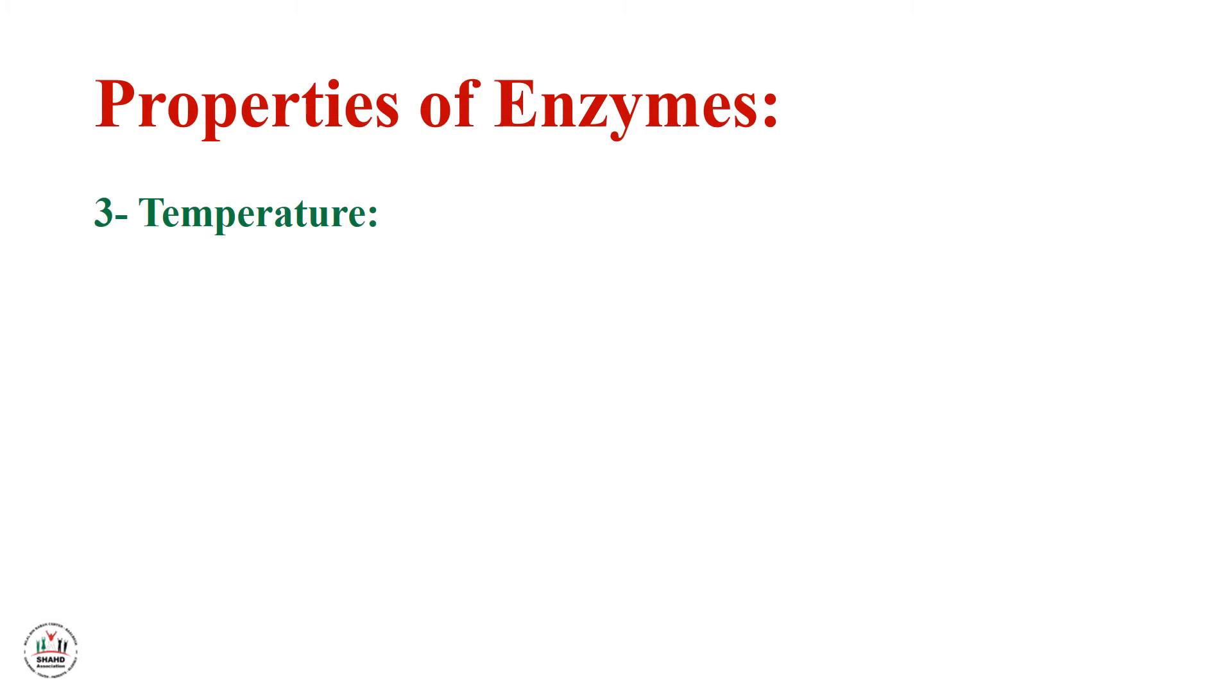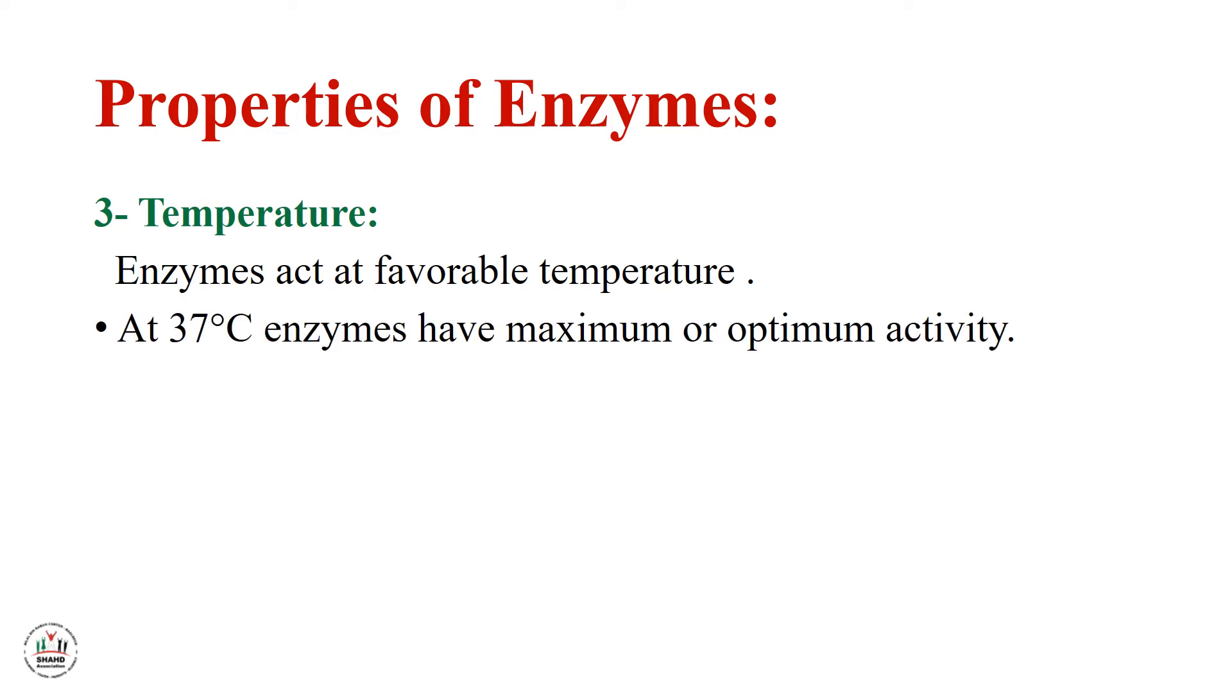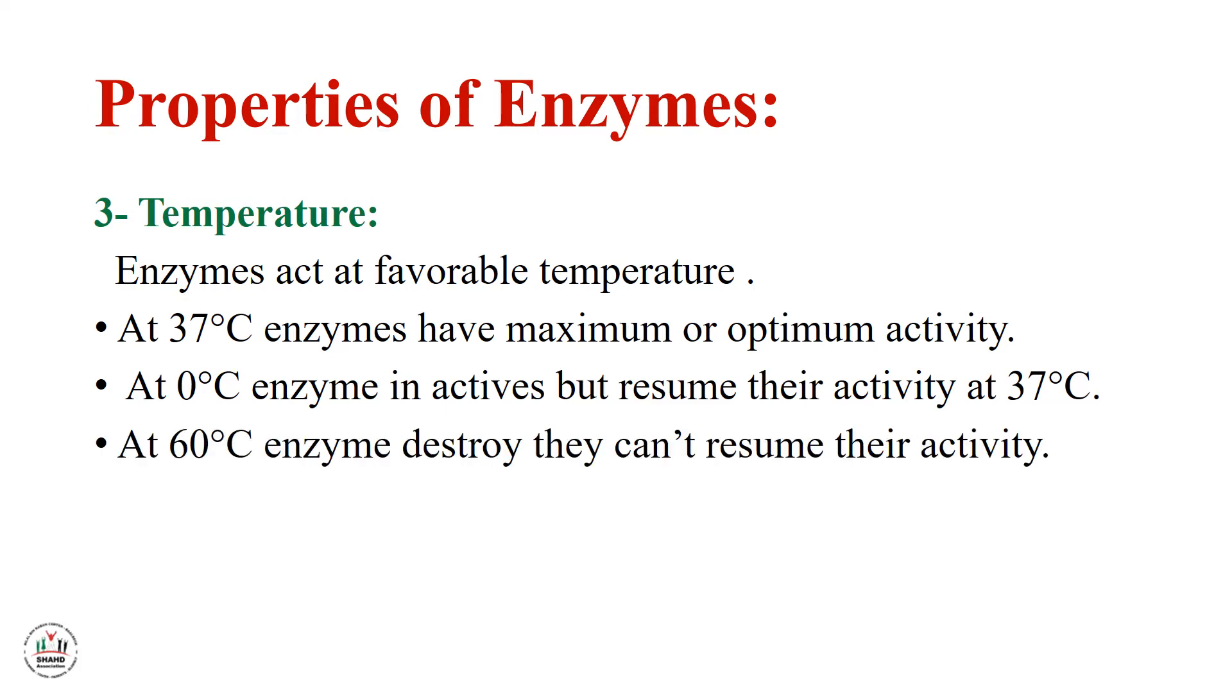The third property of enzyme is temperature. Enzymes act at favorable temperature. At 37 degree, enzymes have maximum or optimum activity. At 0 degree, enzyme inactives but resume their activity at 37 degree. At 60 degree, enzyme destroy - they cannot resume their activity.